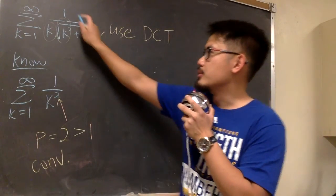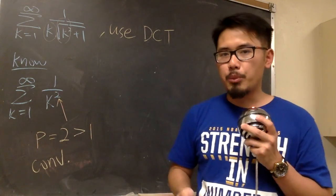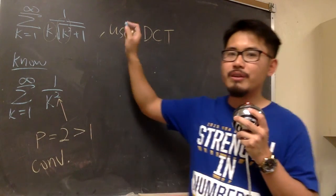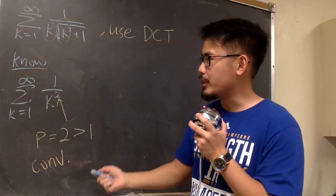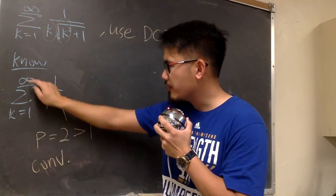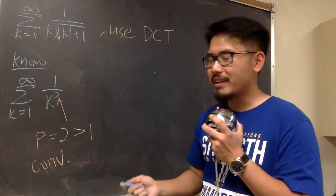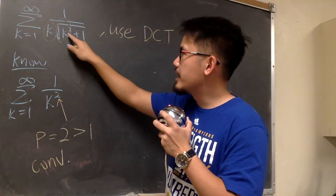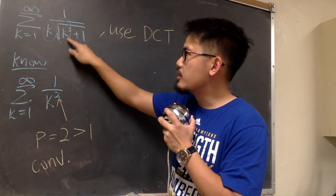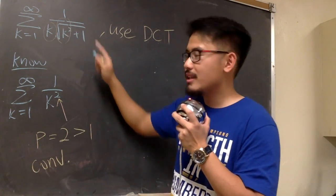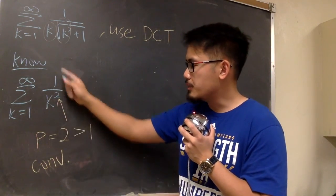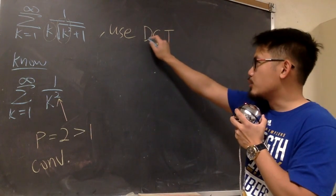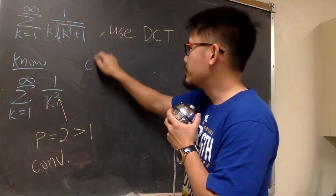Earlier we used the limit comparison test to show this series converges. Now let me show you how to use the direct comparison test to reach the same conclusion. We again write down the known series: sigma when k goes from 1 to infinity of 1 over k squared, a p-series with p equal to 2, so it converges. For the direct comparison test, we need to verify an inequality rather than compute a limit.